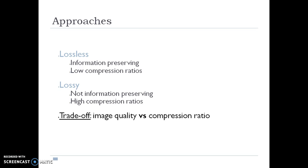The approaches for image compression are lossless and lossy compression. Lossless, as the name indicates, is information preserving and has a low compression ratio. Lossy compression does not preserve all information—some information is lost—and has a high compression ratio.